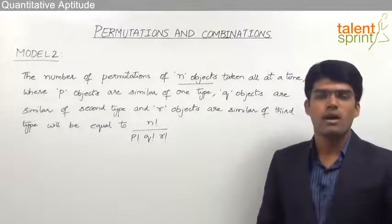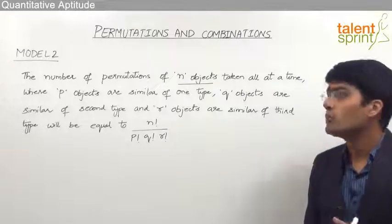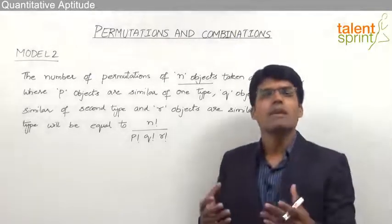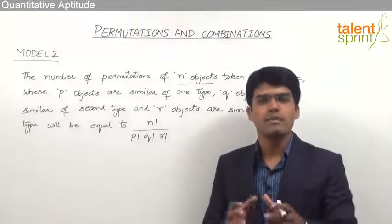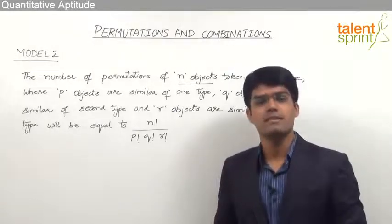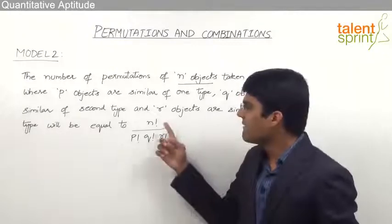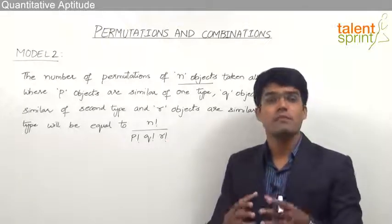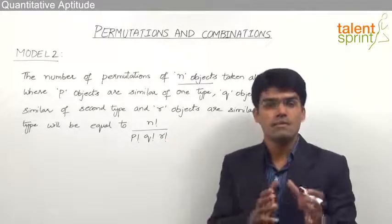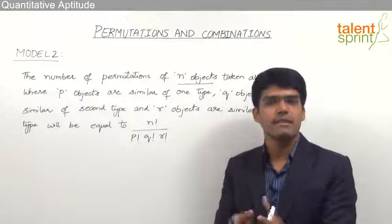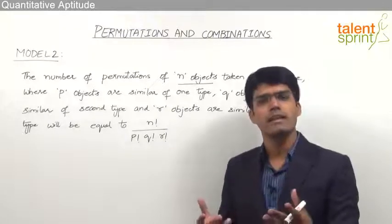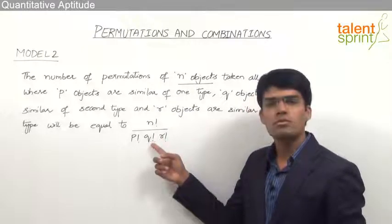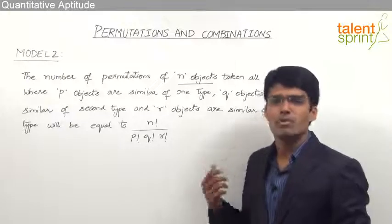One point to add here is that it is not a hard and fast rule that there should be only three categories. For example, sometimes there can be only two categories of objects — p objects of one type and q objects of a second type — so in such cases the answer should be n factorial by p factorial into q factorial, and r factorial will not be there. In some cases there may be four types of categories: p, q, r, and s objects, so the answer will be n factorial divided by p factorial into q factorial into r factorial into s factorial, and so on.